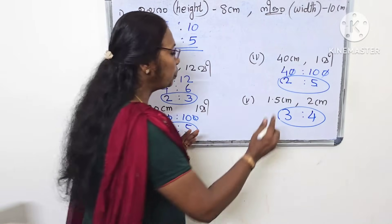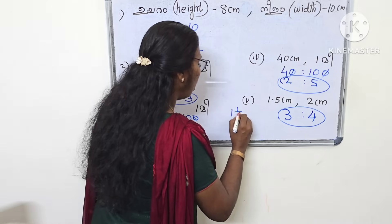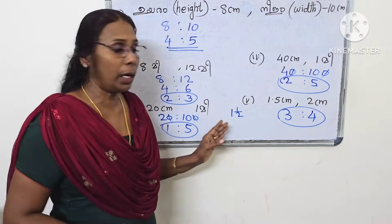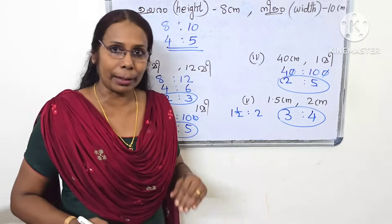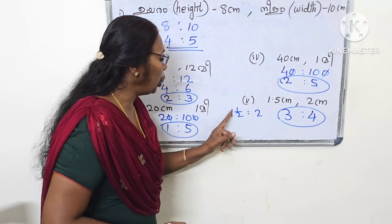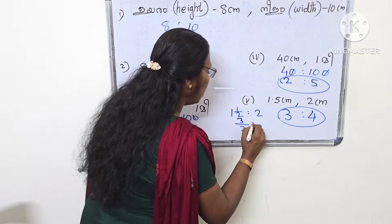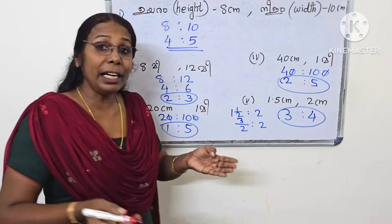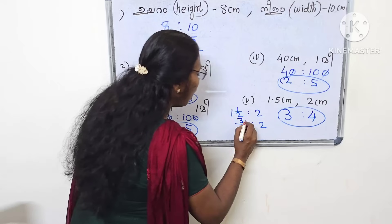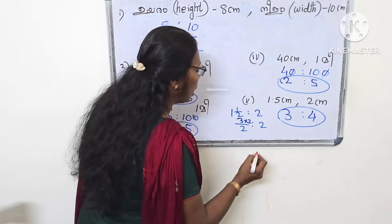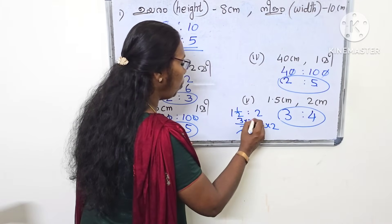What do we need to add? 1 is to 2. This is the answer. So 1 is to 2, 1 is to 1. Then 3 by 2 is to 2. If we add 2 to 2, then add 2 to 3.